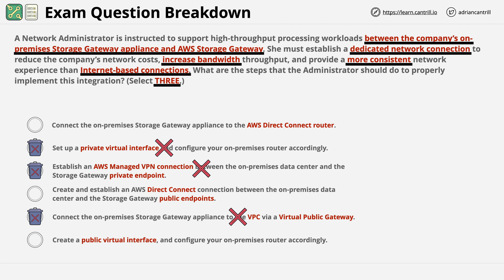This only leaves us with three answers remaining, and we're only being asked to pick three. This is why elimination is often so important — you can often answer questions just by using elimination, even if you aren't sure of the correct answer. You would connect the storage gateway appliance to the Direct Connect router — answer A. Then create a public VIF to allow connectivity to the public space Storage Gateway endpoints — answer F. And finally answer D, which creates a connection between the on-premises data center and the storage gateway public endpoints.